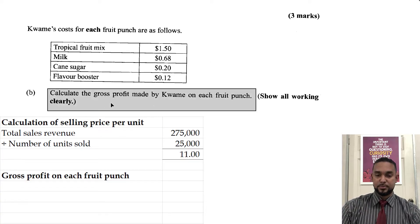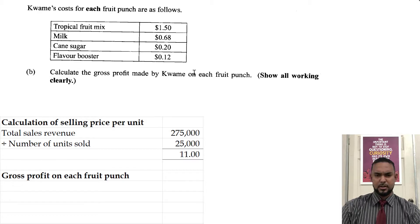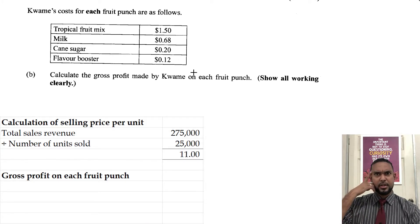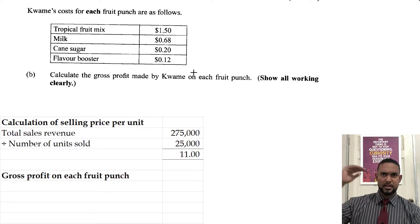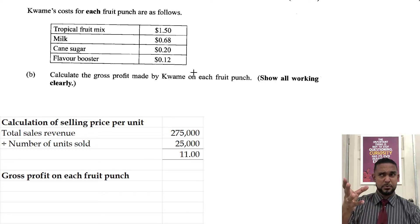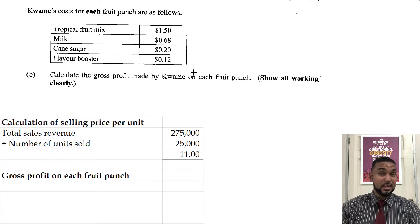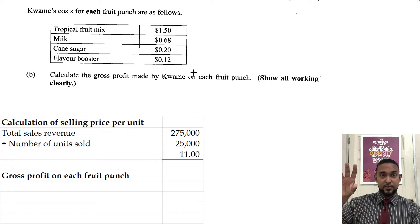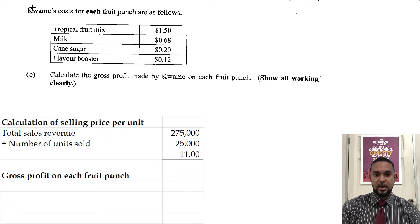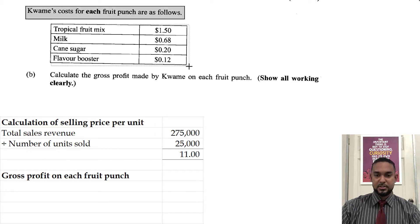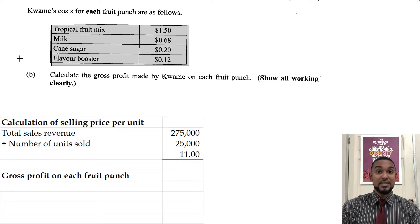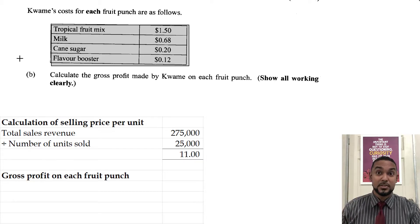They want the calculation of the gross profit made by Kwame on each fruit punch. How do we figure out gross profit? You might think you need to do a full trading account with $275,000 and 25,000 units — but think about the context. We just found the selling price per unit in part A, which is the sales revenue for one unit. These costs here are for each fruit punch. If you add them up, you get the cost of each fruit punch. Gross profit is simply selling price minus cost price — that's all the trading account is.